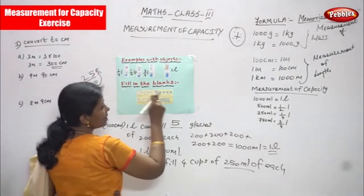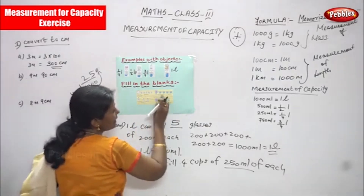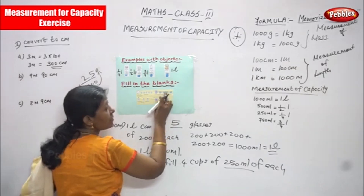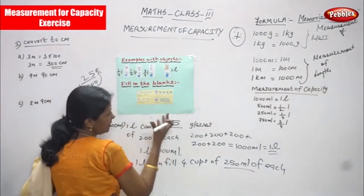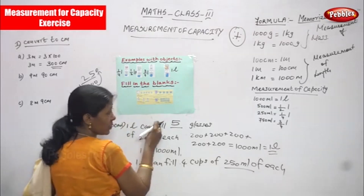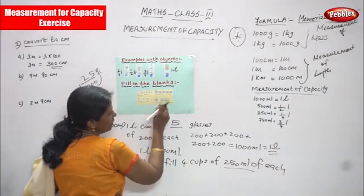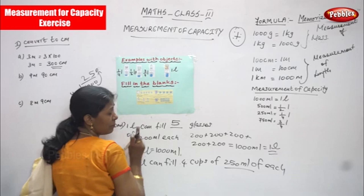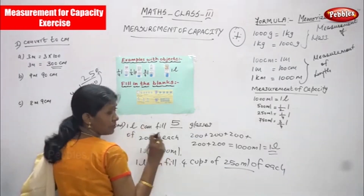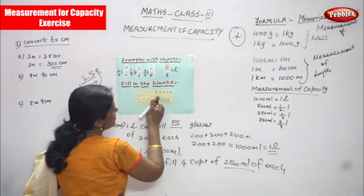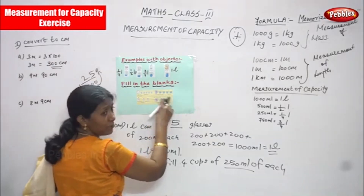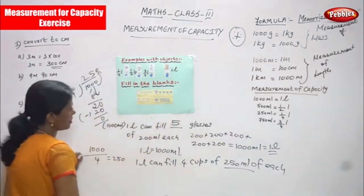They are clearly given in each cup 250 ml. Just they want to confuse — you have to clearly understand the question and find the answer and fill in the blanks. So one liter can fill four cups of 250 ml of each — this is the right answer.